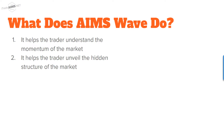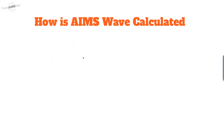What does AIMS Wave do? Number one, it helps the trader understand the momentum of the market — which way the market is going and what its momentum is. Number two, it helps the trader reveal the hidden structure of the market. I'll put links in the description to my previous two or three videos which focused on how to count the waves using the AIMS Wave indicator.